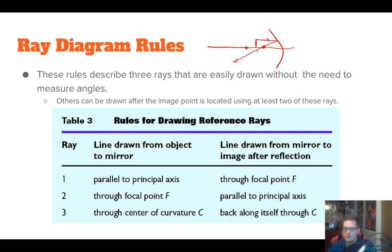The second ray goes through the focal point, hits the mirror, and bounces off parallel to the principal axis. The third ray goes through the center of curvature — if the object's position means the center of curvature isn't directly toward the mirror, draw an imaginary line so the ray bounces off the mirror and comes back through the center of curvature. These three rays intersect at a point, and that intersection is where your image is.